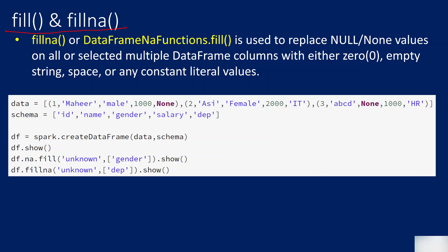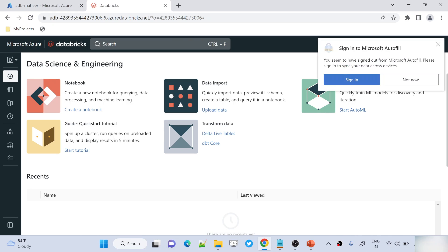Let's assume you have null or None values in your DataFrame and for some reason you want to replace them with some values — it may be an integer number, a string, or some constant value. You want to replace nulls and None values inside a DataFrame. In such situations you have to use the fill and fillna function. Both functions do the same thing, so you can use whichever you feel comfortable with.